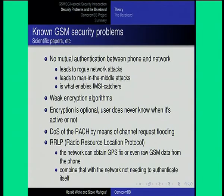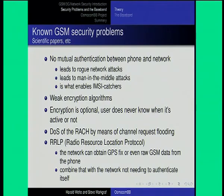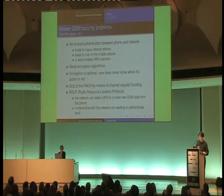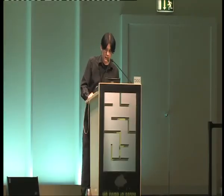To practically implement the security problems that have been described in theory, we need to implement the protocol stack and drivers on actual hardware. The key security issues include: no mutual authentication, which leads to IMSI catchers and man-in-the-middle rogue base station attacks; weak encryption algorithms; encryption being optional; denial of service against the random access channel, first publicized by our co-developer Dieter Spahr in late 2009; and the radio resource location protocol that allows the network to obtain GPS fixes of the handset without any indication to the user.